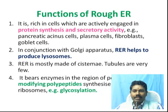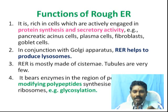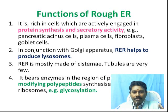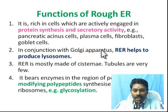Cells with abundant rough ER include plasma cells, fibroblast cells, and goblet cells — wherever enzymes are needed and hormones are produced. Most hormones are also made up of protein. Protein plus lipid forms steroid hormones. Rough ER is also involved in protein plus carbohydrate addition. In conjunction with the Golgi apparatus, rough ER helps to produce lysosomes, which is another important organelle.